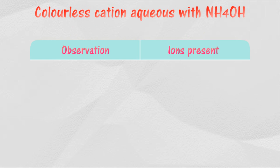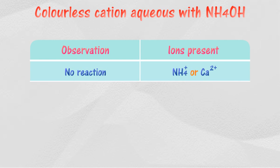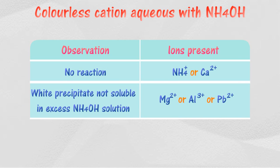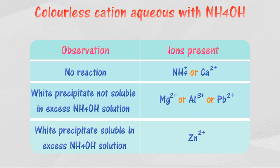For colorless cations in aqueous solution with ammonium hydroxide: if there is no change in the solution, ammonium or calcium ions may be present. If a white precipitate forms that is not soluble in excess ammonium hydroxide solution, magnesium, aluminum, or lead ions may be present. If a white precipitate forms that is soluble in excess ammonium hydroxide solution, zinc ion may be present.